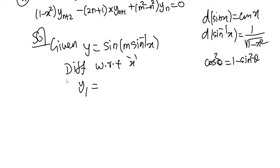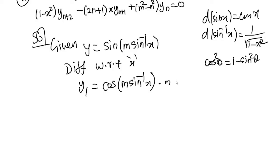If you look at the differentiation of y: dy/dx is y1. y1 is the first-time differentiation. Now, differentiating sin gives cos of the bracket. What is in the bracket? Applying the sin⁻¹ formula: 1 by root of (1 minus x²). So y1 = cos(m·sin⁻¹x) · m/√(1-x²).